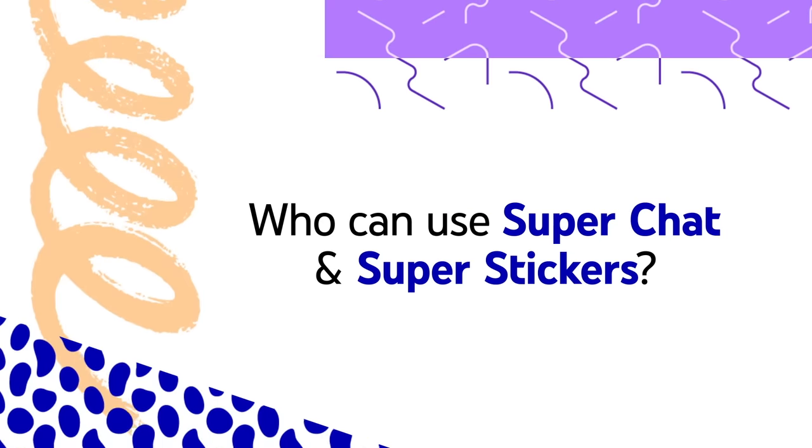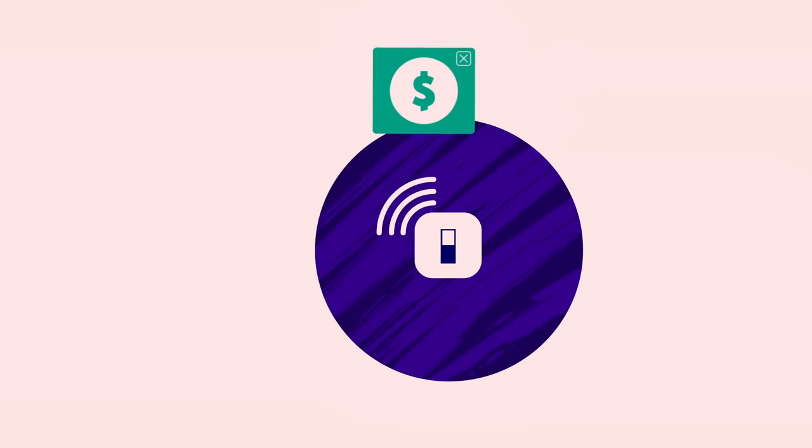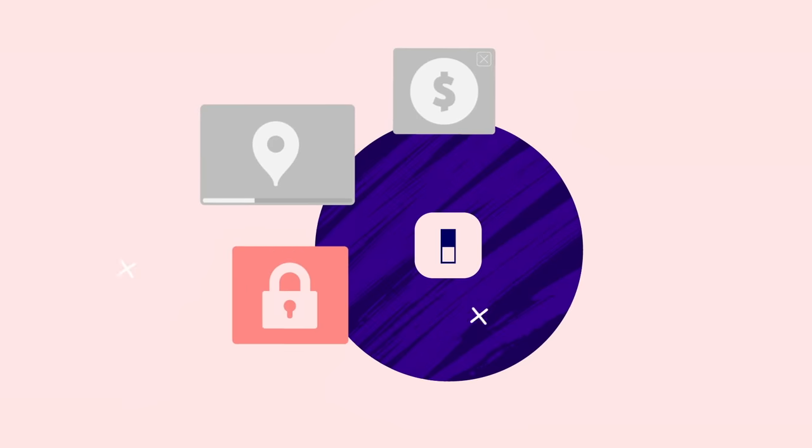Who can use Super Chat and Super Stickers? Here's a quick rundown of some of the eligibility requirements. Your channel must be monetizing and you have to be in an eligible location. These features won't be available if live chat is turned off or if your video is unlisted, private, made for kids, or age-restricted. And they may not be available on premieres of videos that include music owned by a third party. Check out our Help Center article, linked in the description below, for the full list of eligibility requirements, including all available locations.